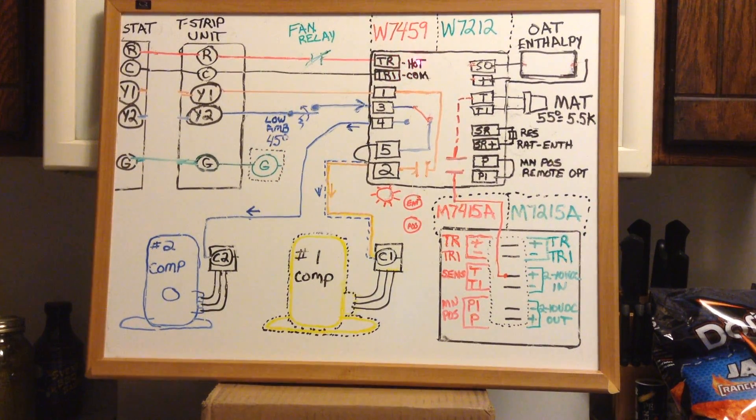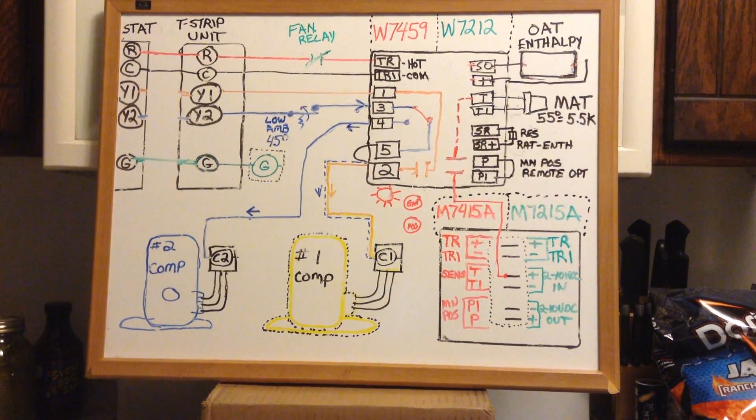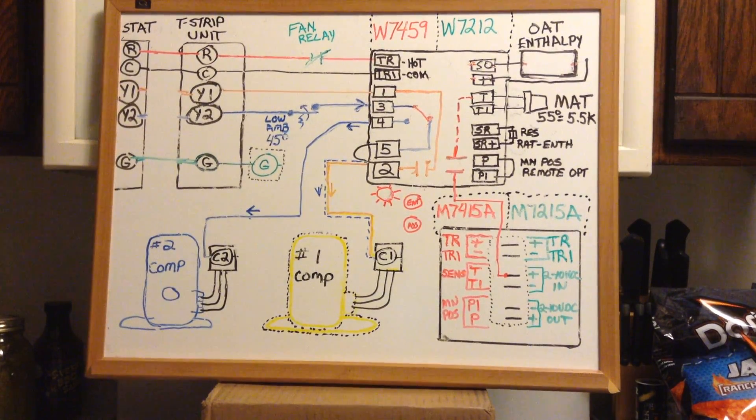So now we've got the blower running. We've got power to the module. At this point, the actuator will run to minimum position at 10% for minimum fresh air, but nothing else will happen. We're not calling for any stages of cooling at this point.